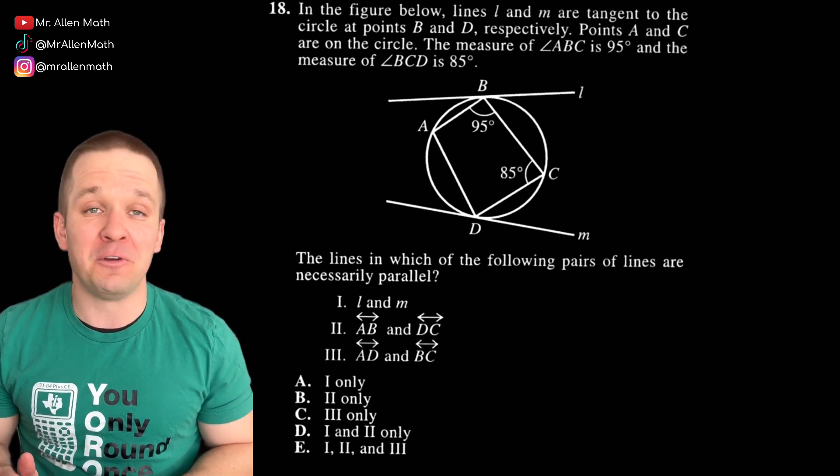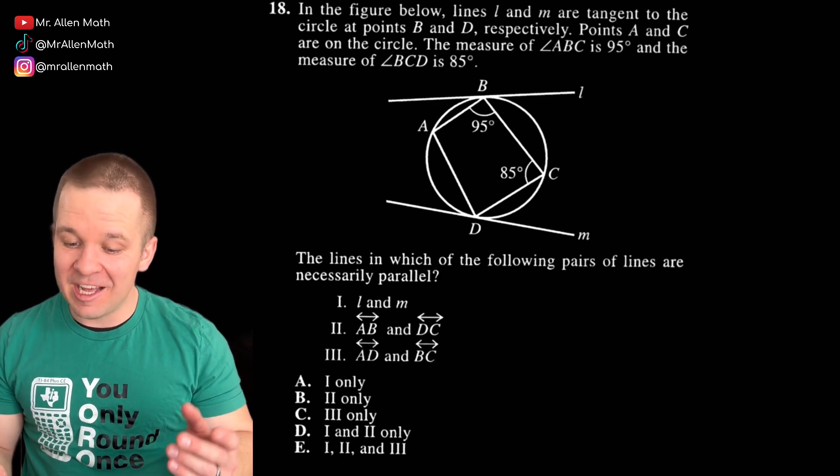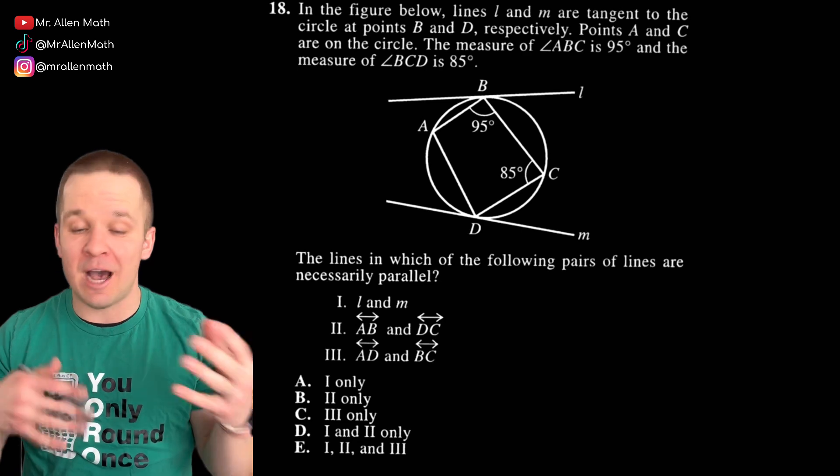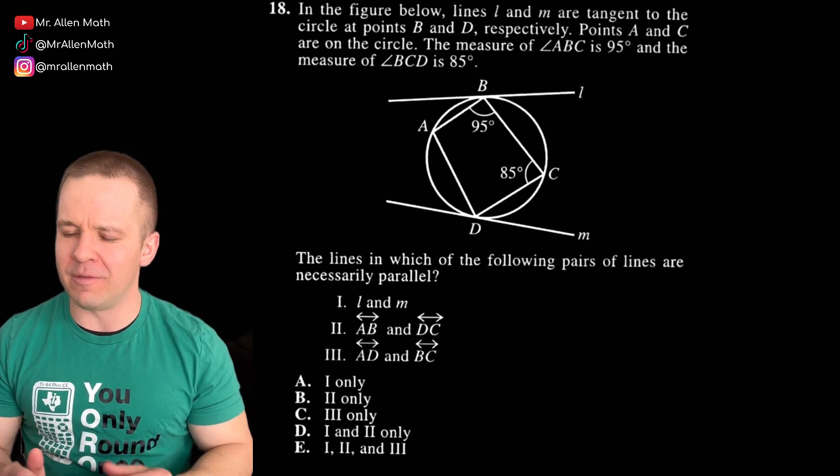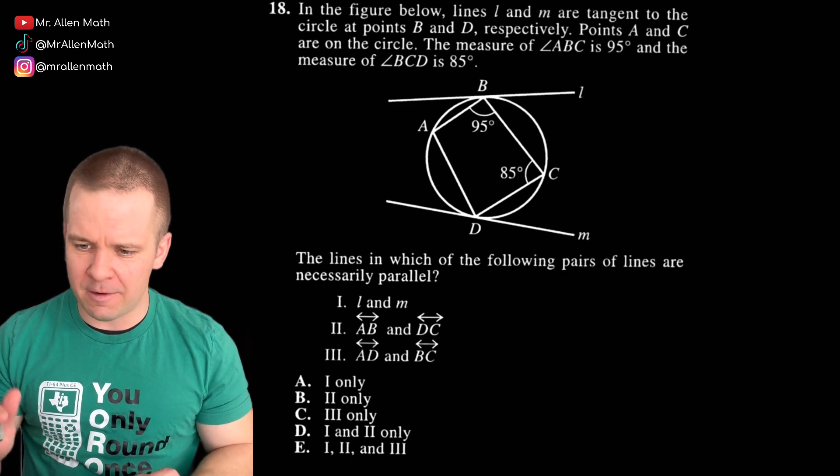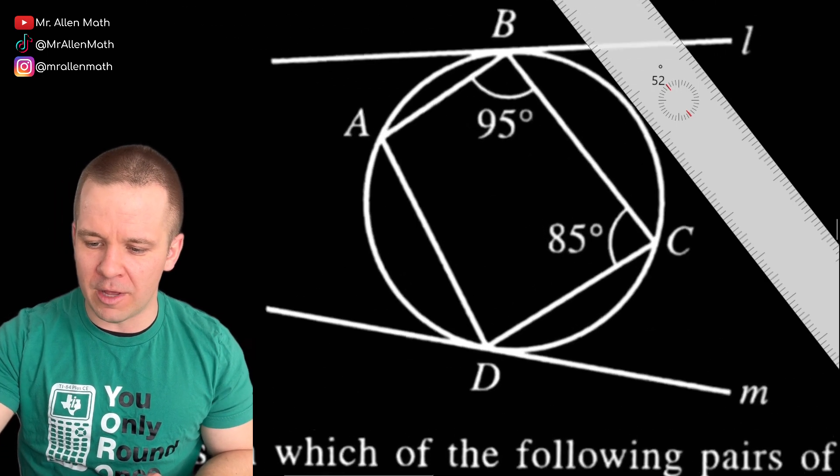And that might seem insignificant, but it actually does matter because this quadrilateral is inscribed in the circle. All four vertices align on the circle. And that means that my opposite angles like A and C are supplementary. They add up to 180 degrees. B and D, same dealio. They're going to add up to 180 degrees. And that can come into play. Now the measure of angle ABC is 95 degrees, and the measure of angle BCD is 85 degrees.